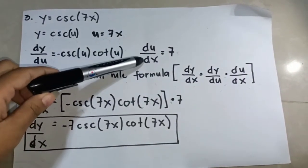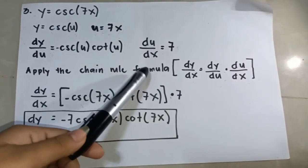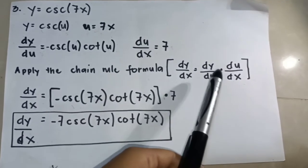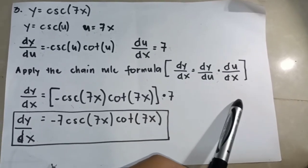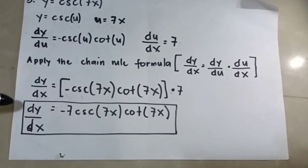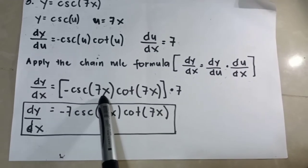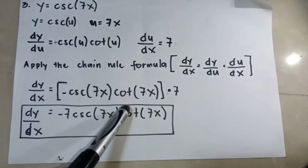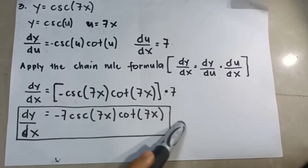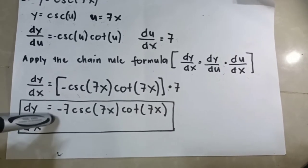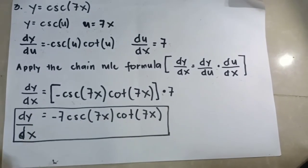The derivative of u with respect to x is the derivative of 7x, which equals 7. Step 2, we apply the chain rule formula: dy/dx equals dy/du times du/dx. Substituting the values: dy/dx = −csc(7x) · cot(7x) × 7. So the derivative of y with respect to x equals −7csc(7x)cot(7x). This is our final answer.